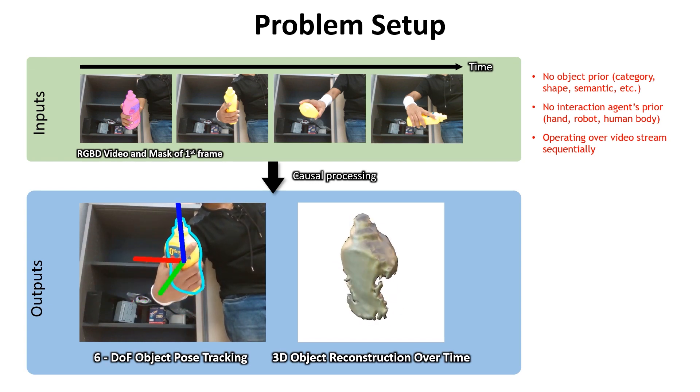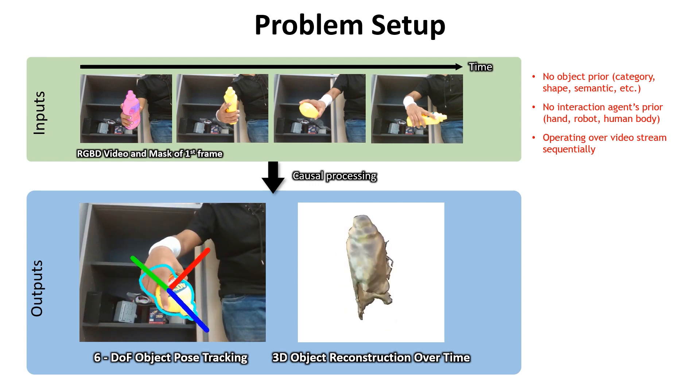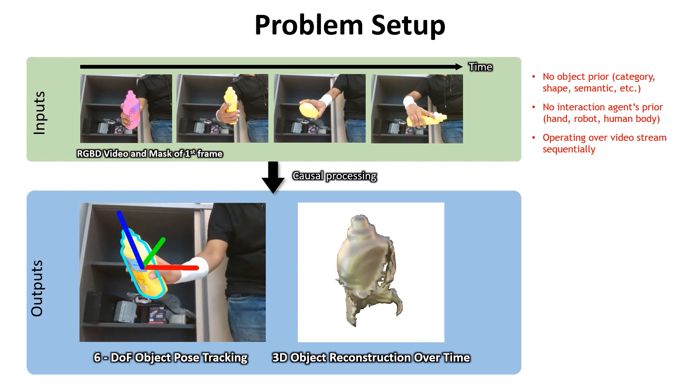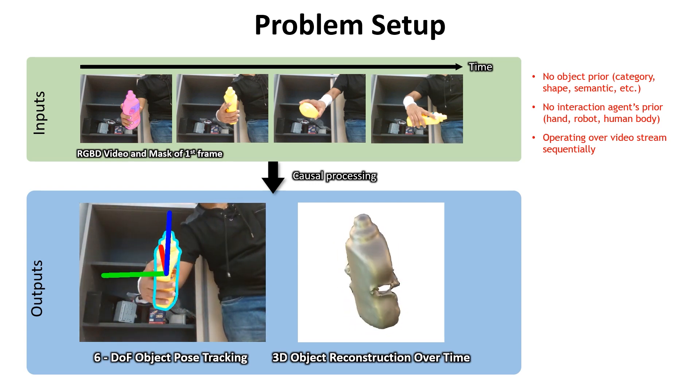Given an input of RGBD sequence with the initial mask of a novel unseen object, our method is able to track the 6-DoF object pose while doing 3D reconstruction.